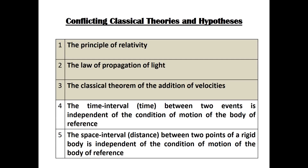Welcome to part three of this series. We left part two at a point where Einstein had thrown doubt on the validity of three of the five classical theories and hypotheses we introduced earlier. These are the principle of relativity, the law of propagation of light, and the classical theorem of the addition of velocities.